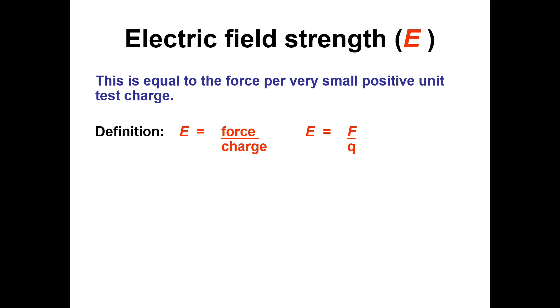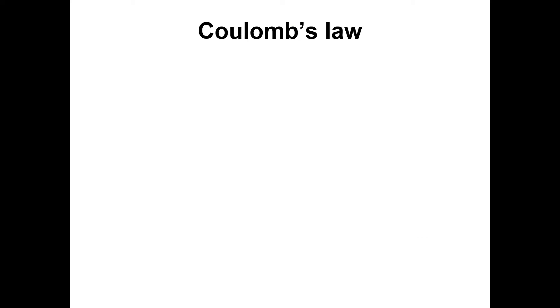On to field strength. The electric field equivalent of little g from gravitational fields. Electric field strength, and helpfully, given the symbol capital E, which stands for energy and various other things. It's equal to the force per unit charge, as opposed to force per unit mass for little g in the previous topic. Just remember, this is F equals EQ. But if you put E as subject, E is F over Q. I prefer capital Q and lowercase Q, but you could do Q1, Q2 as well. The unit, and this is a vector quantity, is Newtons per Coulomb. The direction is the same as the force on a positive charge.